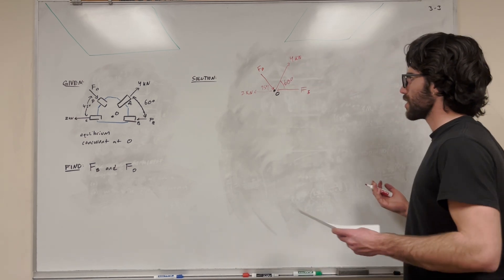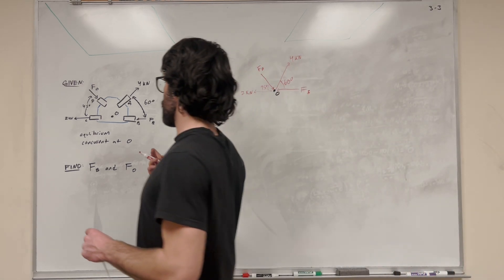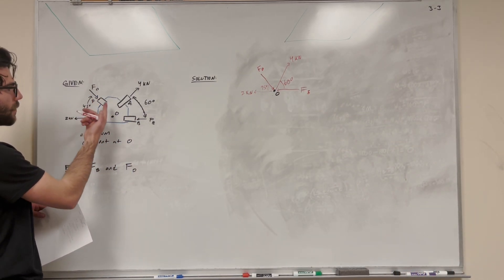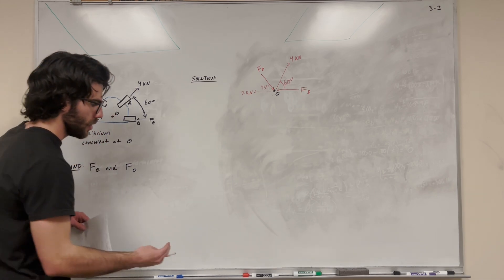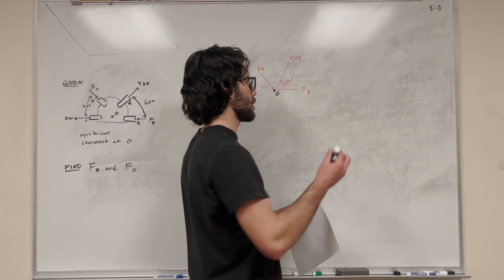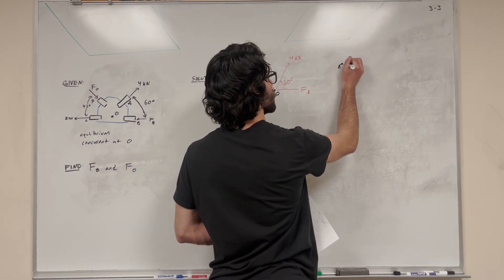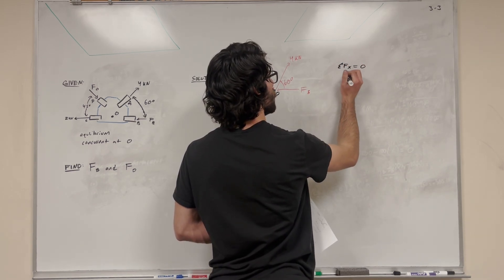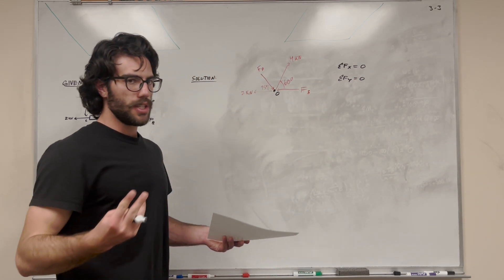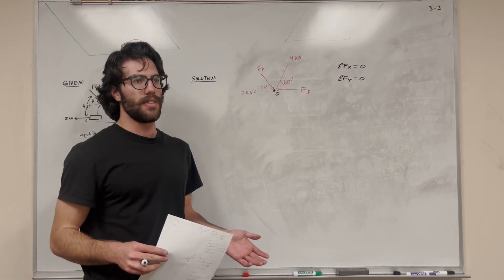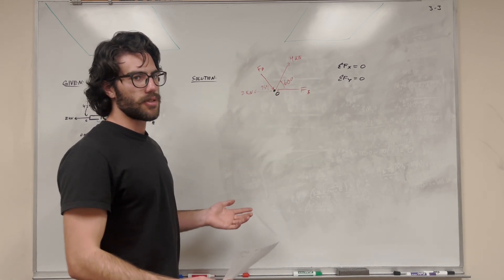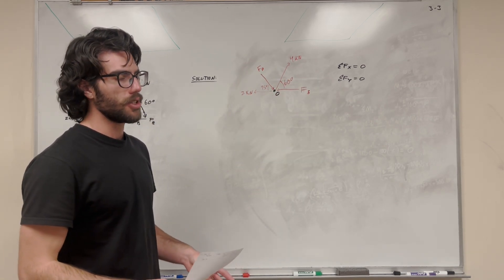Force A, which is 4 kilonewtons, is at a 60 degree angle. The reason I can simplify all these forces to acting at O is because it says that they're all concurrent to O — we can just extend that force to be happening at O. So this is our free body diagram. We set that sum of the forces in X is equal to zero, and sum of the forces in Y is equal to zero. With two equations and two unknowns, you can solve.